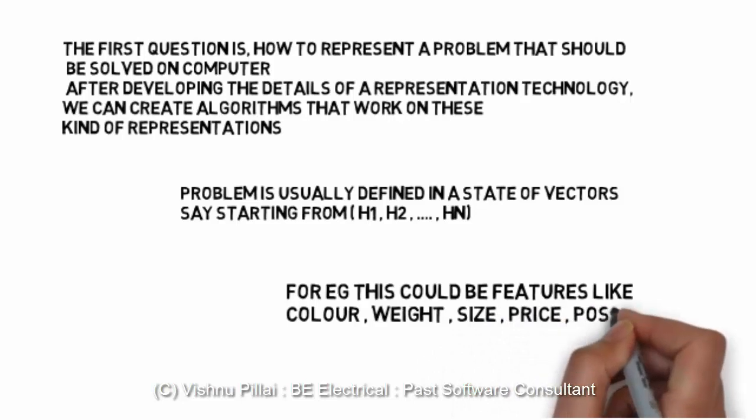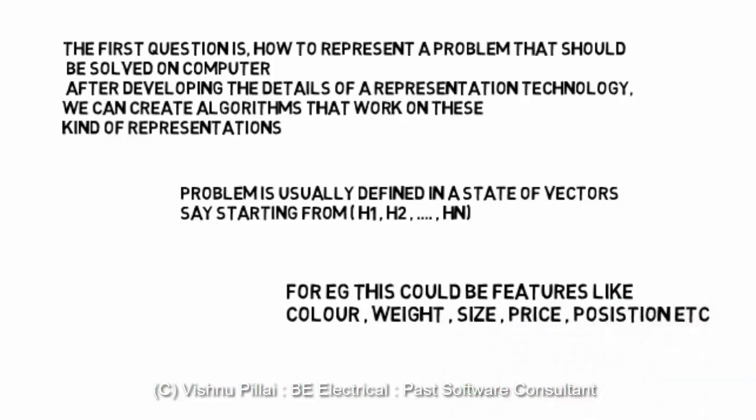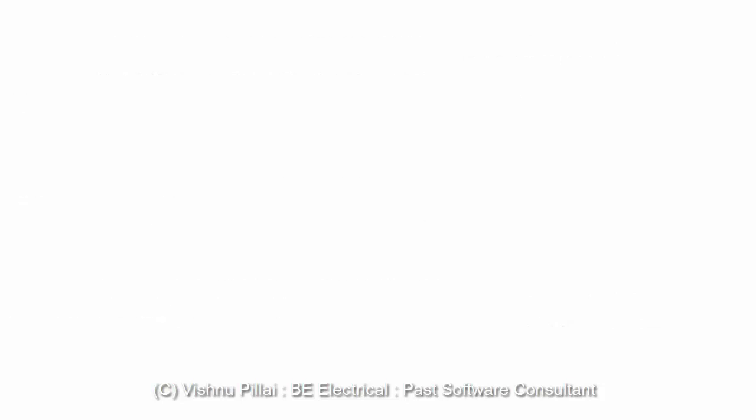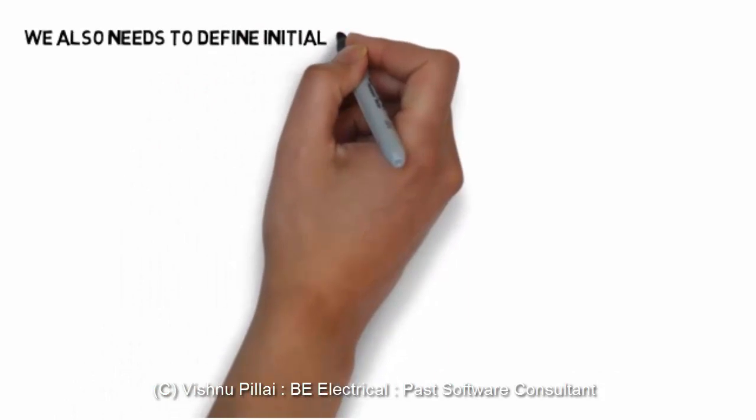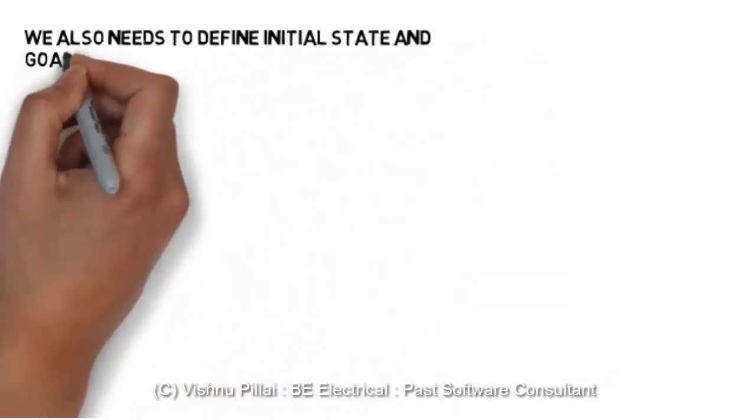We can represent it in the form of state vectors starting from h1, h2, to hn. This could be different features we would like to work on, like color, weight, size, price, etc.